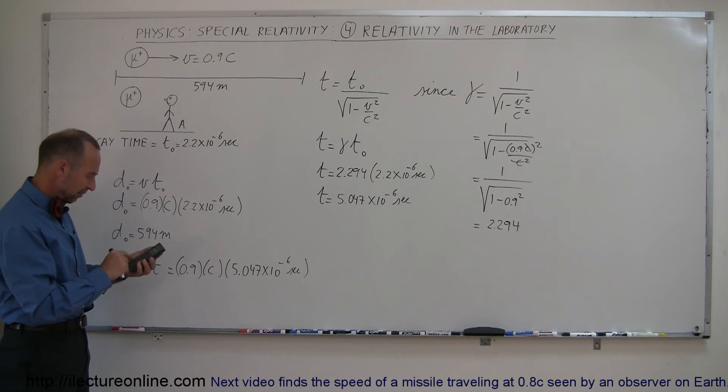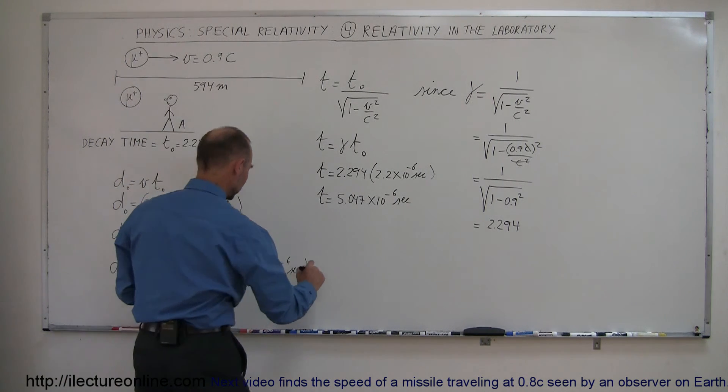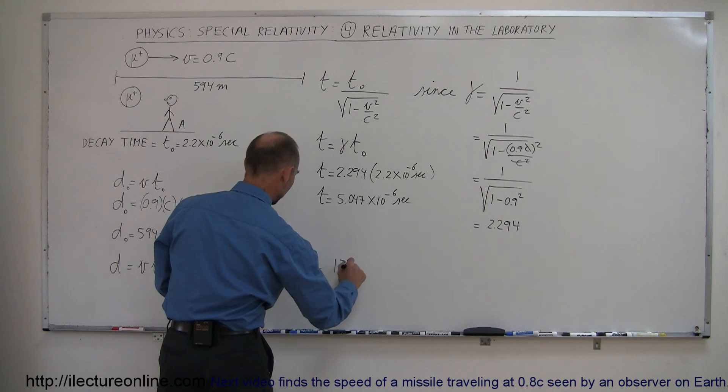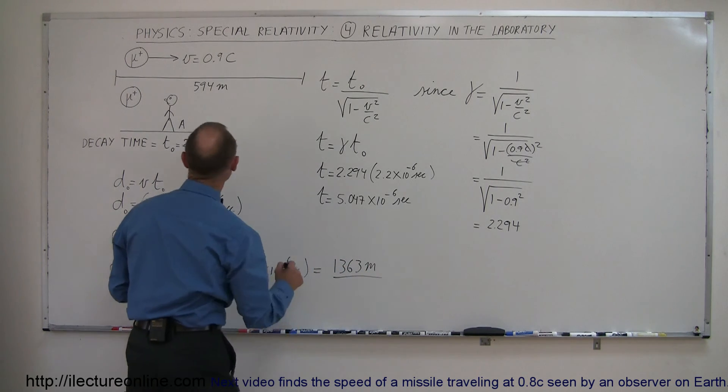And so let's do that, 5.047 times 10 to the minus 6 times 0.9 times 3 times 10 to the 8 equals, and actually the particle will travel a distance of 1,363 meters before decaying.